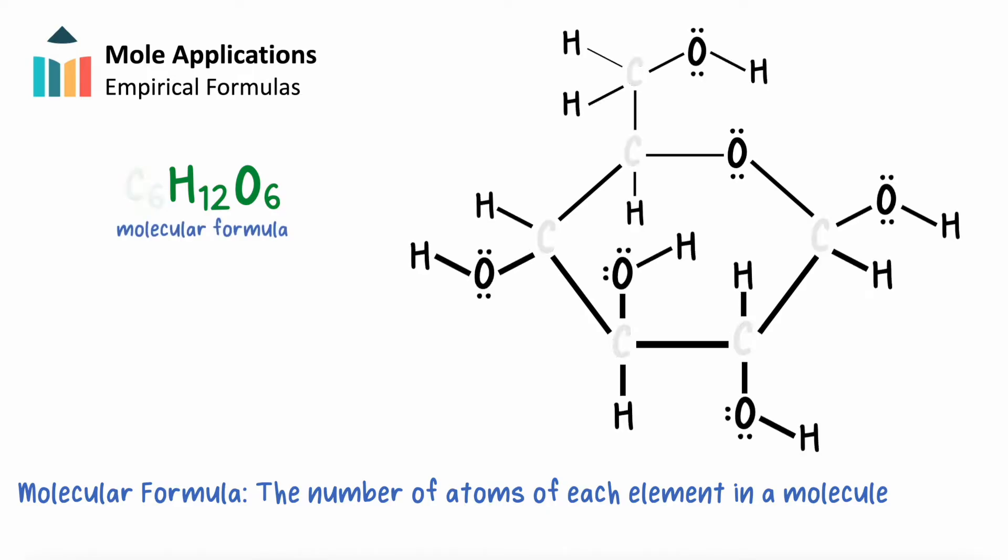Recall that a molecular formula shows us the number of each type of atom present in a particular compound. For example, one glucose molecule contains 6 atoms of carbon, 12 of hydrogen, and 6 of oxygen, covalently bonded together.